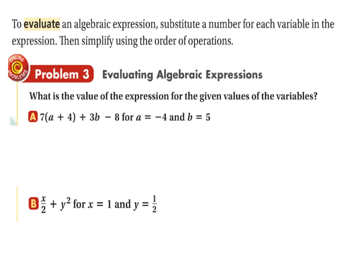When evaluating an algebraic expression, what we do is we substitute a number for each variable in the expression and then simplify using order of operations. So starting with this one here, they tell us A is going to be negative 4 and B will be 5. So we go 7, and then instead of A we put negative 4.